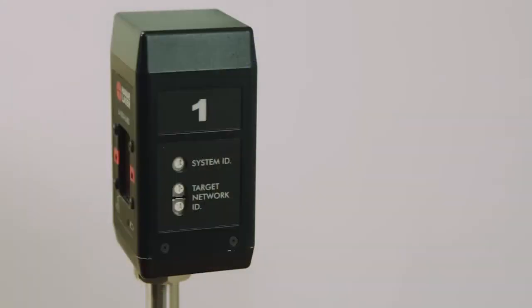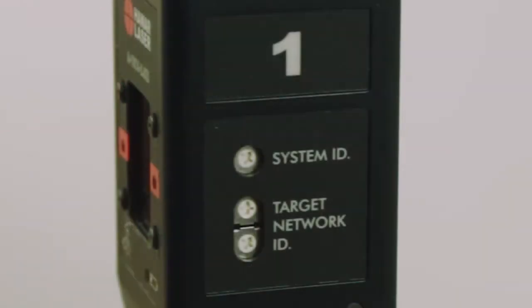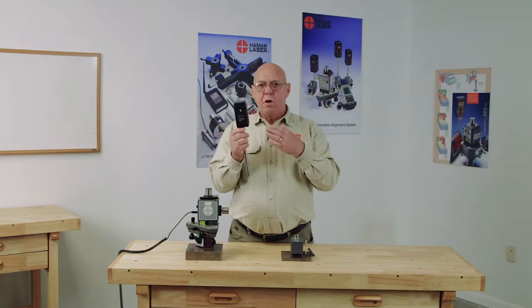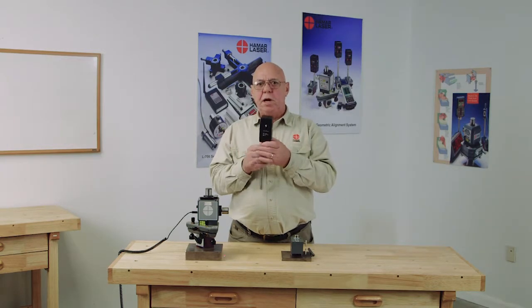There are a series of dials on the side. The top dial is the system ID. So if we have two people using two different systems in a building, they're both on the same channel and they're both using target number one, they'll cross talk so we can change the system ID.